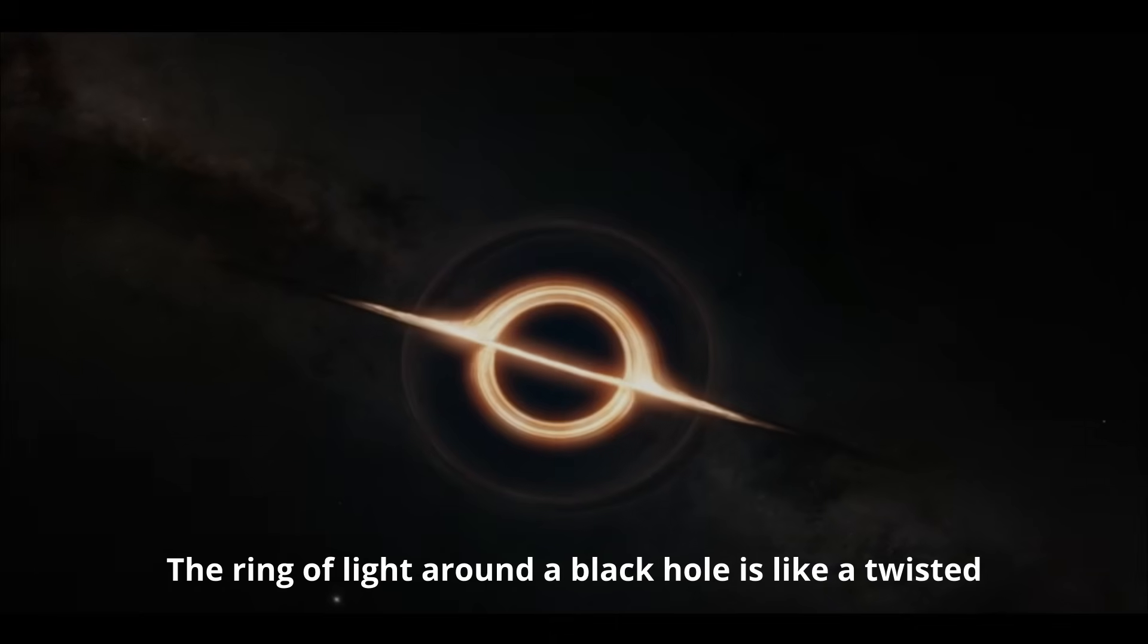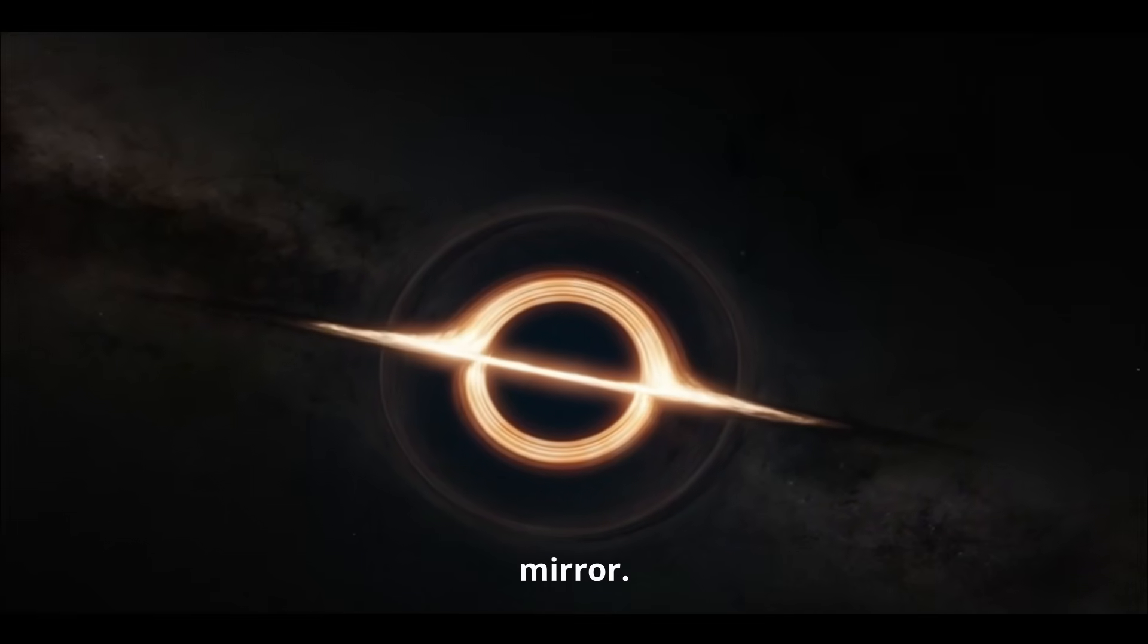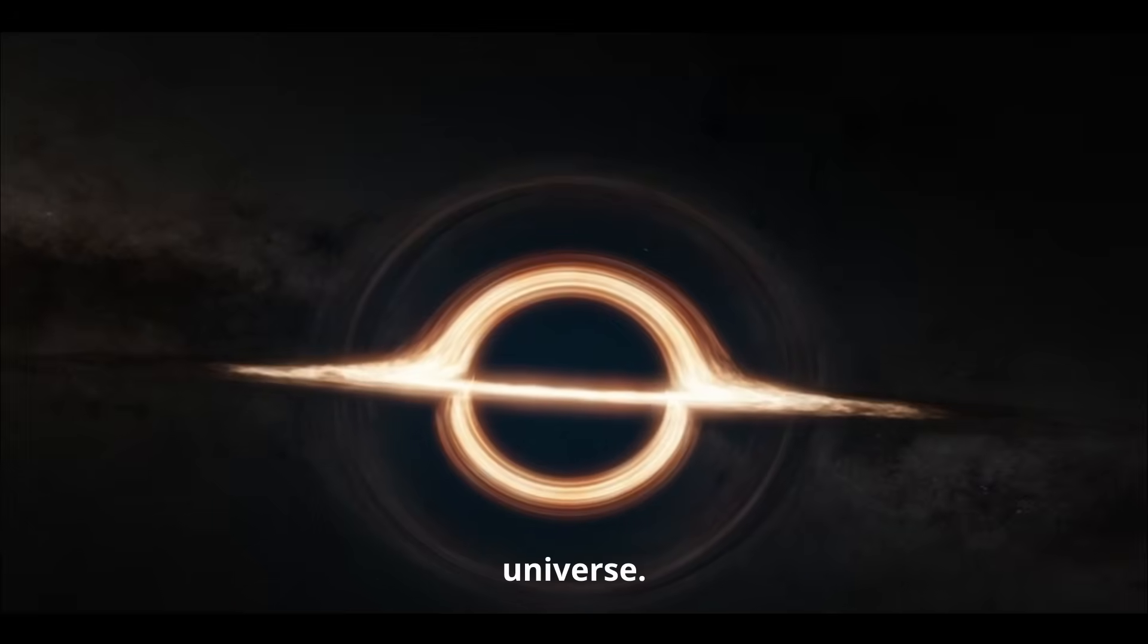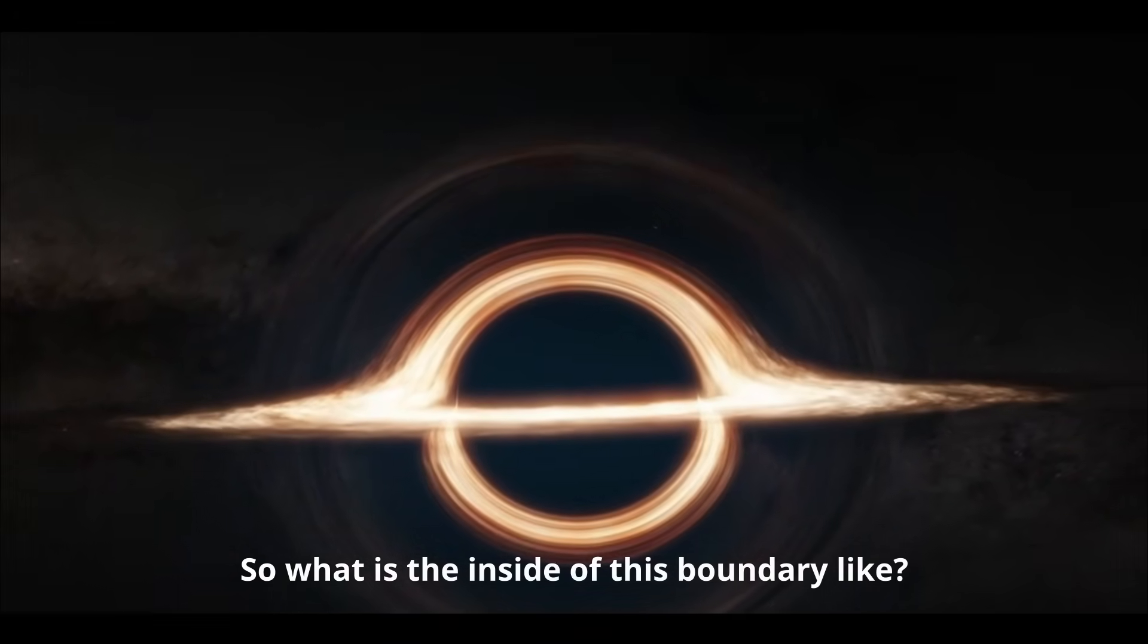The ring of light around a black hole is like a twisted mirror. To look at it is like looking at the boundaries of the universe. So what is the inside of this boundary like?